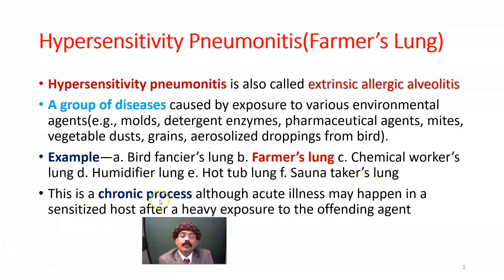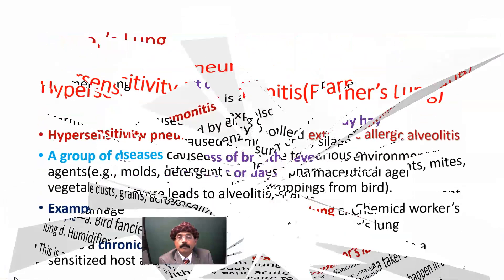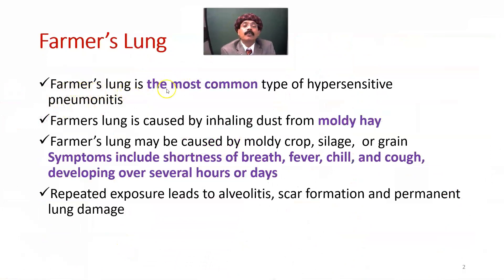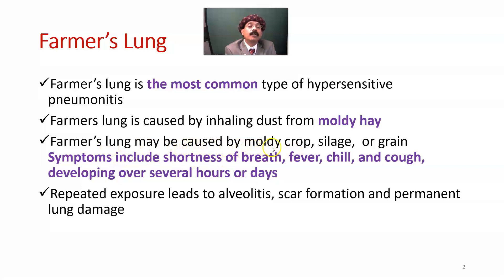Farmer's lung is the most common type of hypersensitivity pneumonitis. This is a chronic process, although acute illness may happen in a sensitized host after a heavy exposure to the offending agent. Farmer's lung is caused by inhaling dust from moldy hay, moldy crops, silos, or grains.